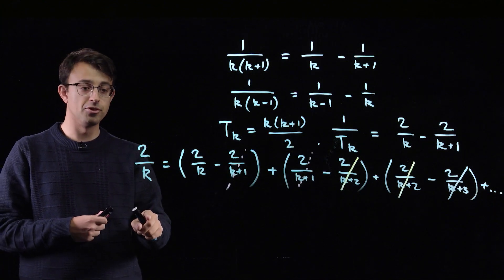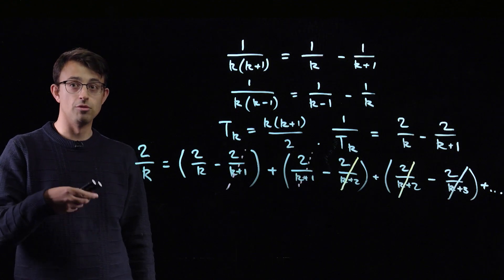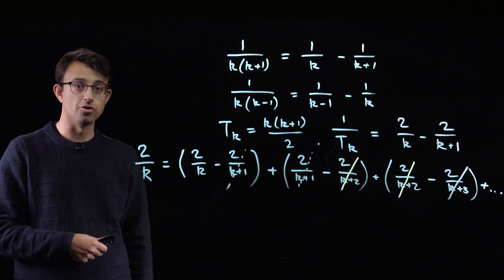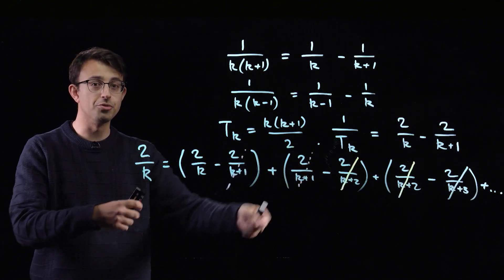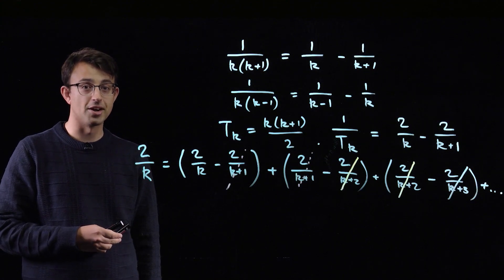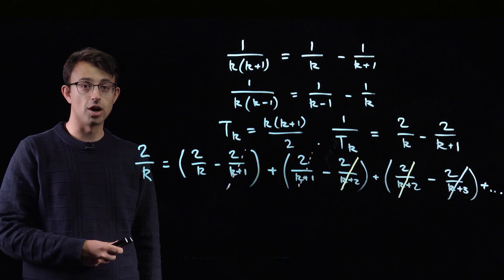But there are a couple of problems. The first problem is that we've got a 2 in the numerator, whereas we're aiming for reciprocals that just have a 1 in the numerator. The more important issue is that we've just performed an infinite sum. And this problem is about finite sums. So we're going to need to make a couple of tweaks to this to make it work for the problem.